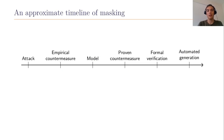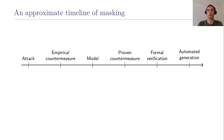If you look at an approximate timeline of masking, it all starts with the invention of side-channel attacks. Then people developed empirical countermeasures which were studied in a more formalized model, enabling proofs of security for some countermeasures. Finally, if you want a very strong sense of security, we sometimes want formal verification of countermeasures and their implementation, and ultimately automated generation of countermeasures.